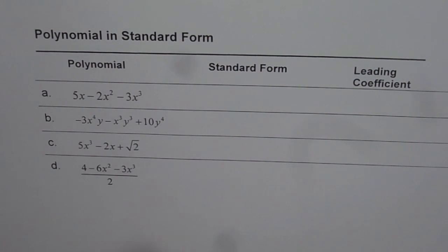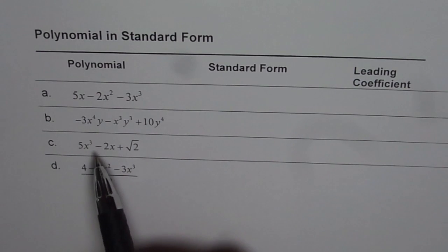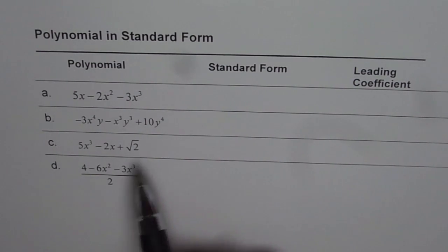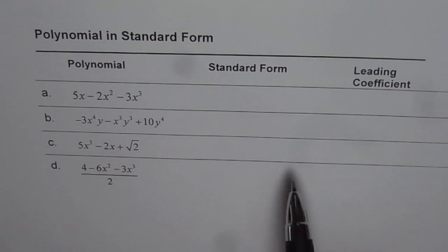We have four examples here. You need to write down all these polynomials in standard form and then write down the leading coefficient. Leading coefficient is the number associated with the term with highest degree. You can pause the video, copy this question, answer it, and then look into my suggestion.